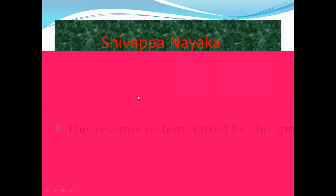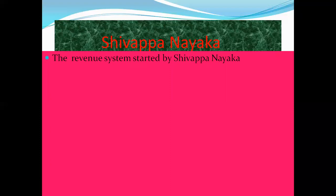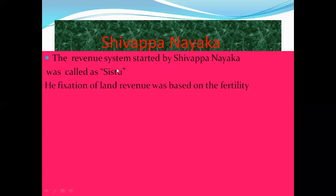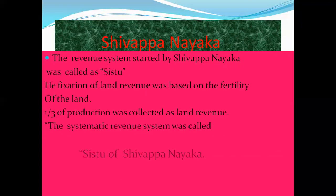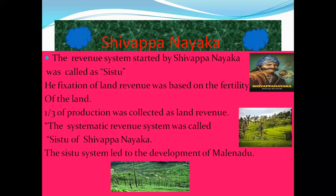Shivapanayaka gave more prominence to Christians because they were well-known in agriculture. He started a revenue system called Shistu. He fixed land revenue based on the fertility of the land, collecting one-third of the production as land revenue. This systematic revenue system was called Shistu Shivapanayaka and led to the development of the Malanadu region.